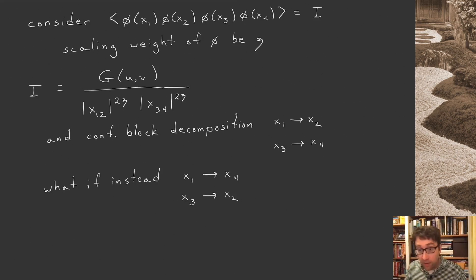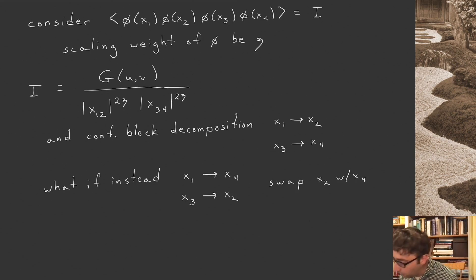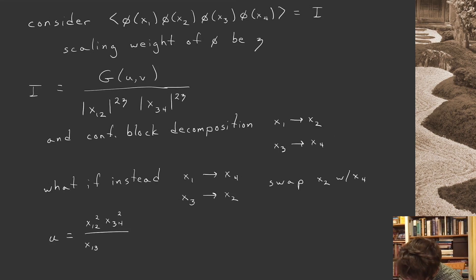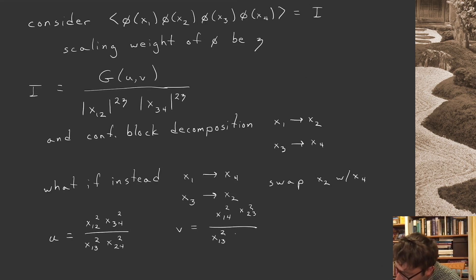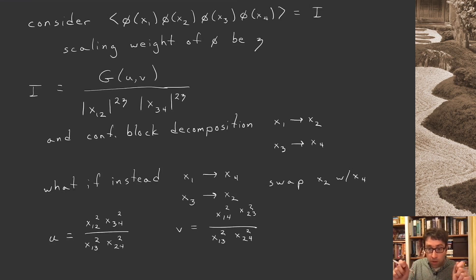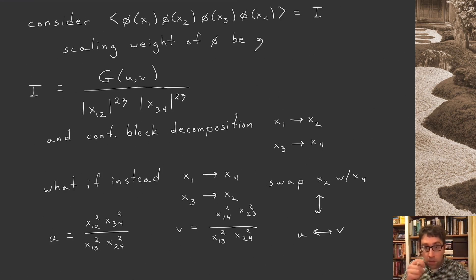Let's see what crossing symmetry means for these functions and conformal blocks. Doing this is effectively like swapping x2 with x4. Looking at the actual cross ratios: u = x12² x34² / (x13² x24²) and v = x14² x23² / (x13² x24²). If we swap points 2 and 4, the denominators stay the same but the numerators exchange places — so this swap also swaps u and v.